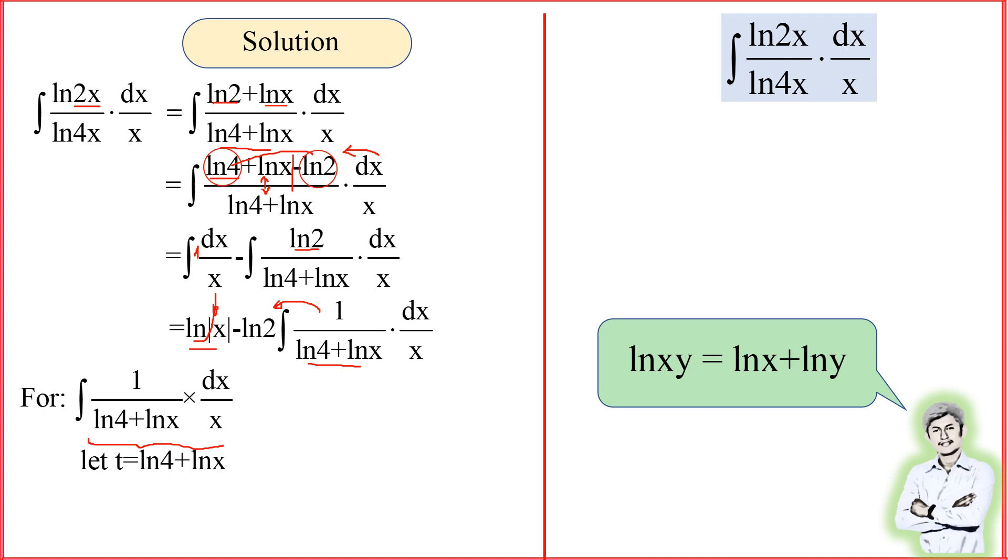What I'm going to do is to do the derivative of t. If I do the derivative of t, because this one is a constant, when I do the derivative it remains zero, and this one, when I do the derivative, it will get 1 over x dx. Can you see something cool here? It's the same, right? So you can just substitute dx over x here into dt. I know that I let ln(4) plus ln(x) equal to t. That's it.